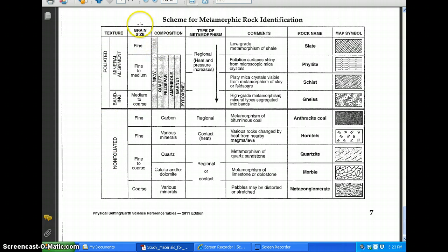Next to that we have your grain sizes. This is how big the grains or the crystals in the rock are going to be, and it ranges anywhere from fine to medium all the way to coarse. Next we have our composition. These are going to be the minerals that make up the different metamorphic rocks.